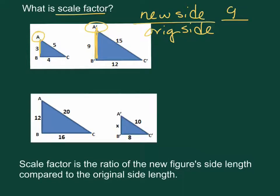The original side was 3, so put 9 over 3, and we can see that your scale factor for this dilation was 3.